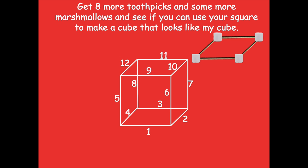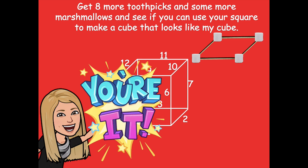Here's a hint to get you started: use your square that you've already built as the bottom — those are edges one, two, three, and four. Then you need to build up on your cube for edges five, six, seven, and eight. Stick those into the marshmallows so they hold nice and strong. Then build your square on top of that. Pause the video, create your cube, and click play when you're ready for the next step.